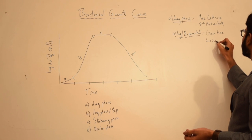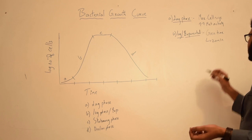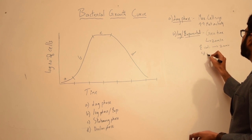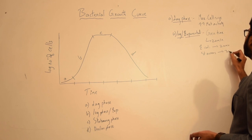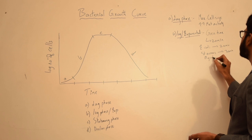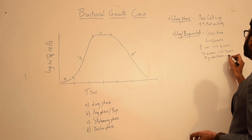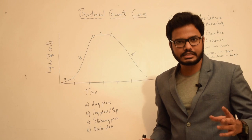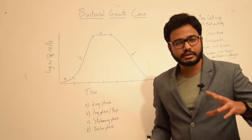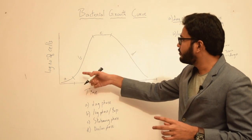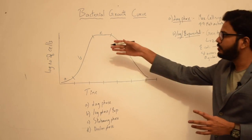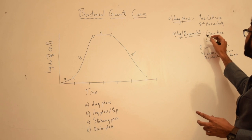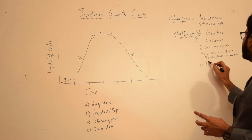Generation time is usually 20 minutes for most bacteria. For example, E. coli generation time is approximately 20 minutes, Staph aureus generation time is approximately 30 minutes, and it is much longer in the case of Mycobacterial species. Also remember that various bactericidal drugs such as penicillin are more effective when the bacterial cells are in log phase or exponential phase.